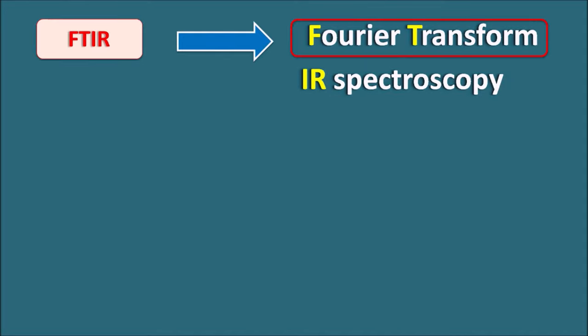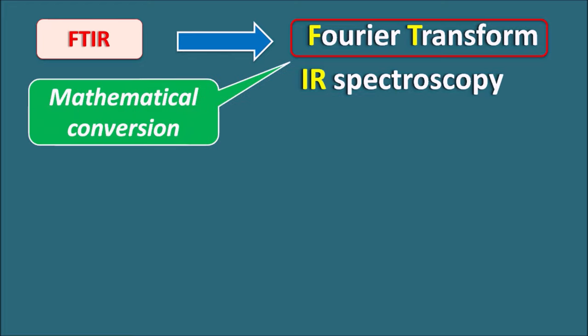What is FTIR? It is defined as Fourier transform IR spectroscopy. Here FT indicates Fourier transform, which is a mathematical conversion that brings an advantage compared with dispersive IR spectroscopy. In FTIR, we are converting the time domain into the frequency domain, and this conversion is called Fourier transformation.